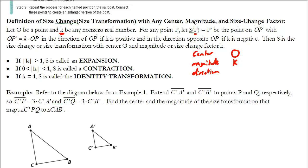It will be in the opposite direction if k is negative. For instance, if this is my point O and this is my point P, it will be in this direction if k is positive, and in this direction if k is negative. So when we're looking at a size transformation, we really want to think about three things: what is my center point, what is the magnitude of the transformation — in other words, how much bigger or smaller is it going to get — and in what direction will that figure be going.